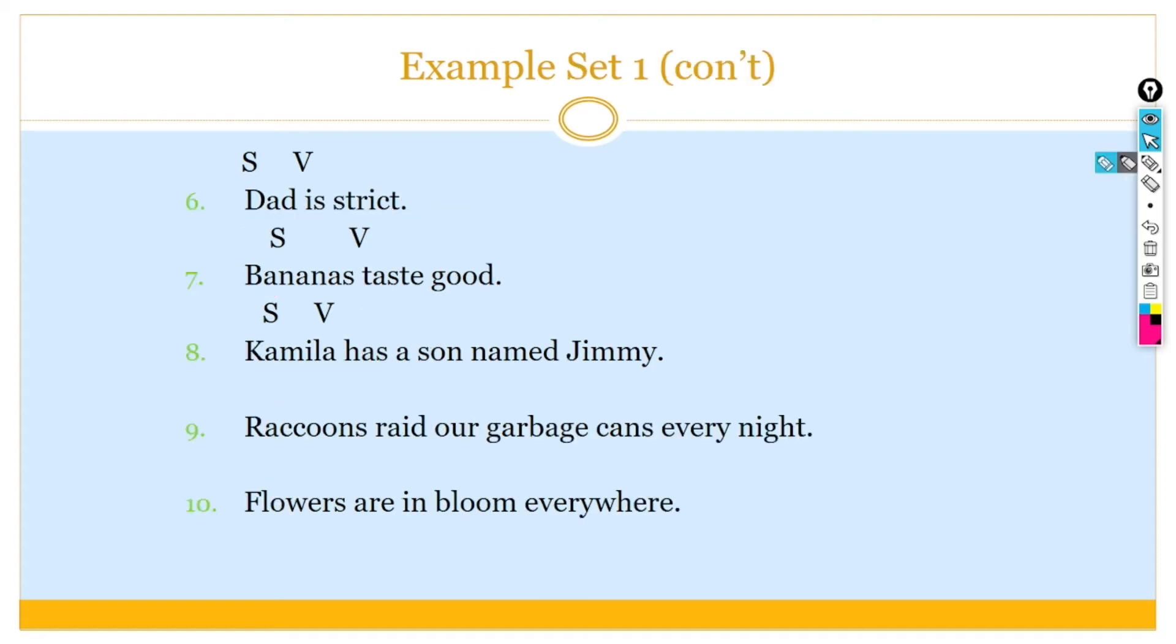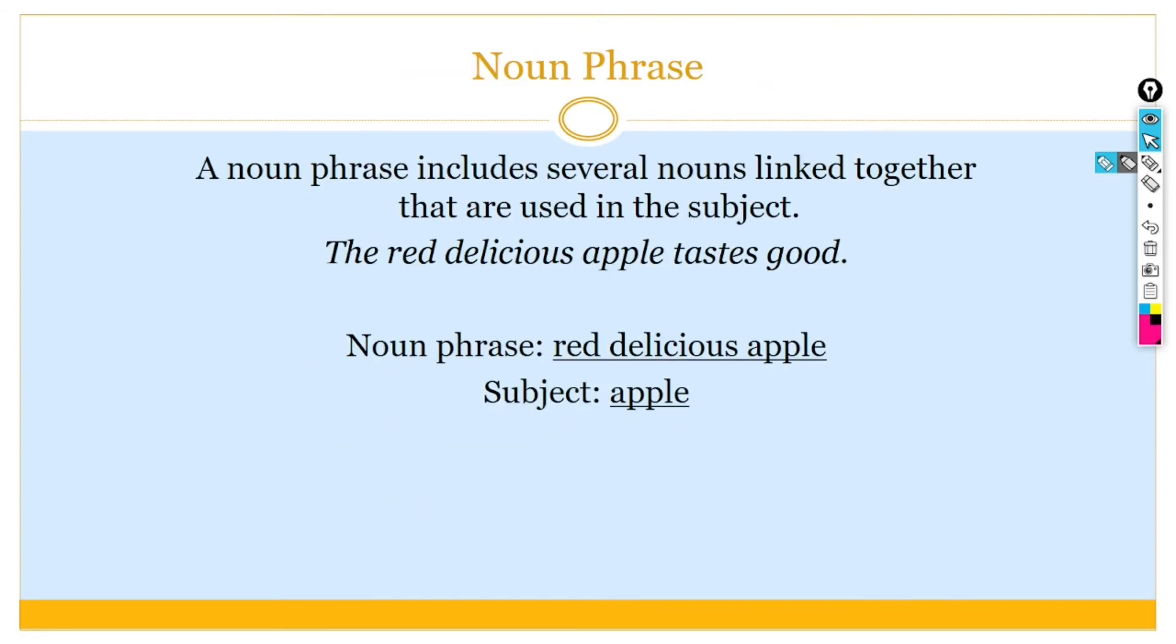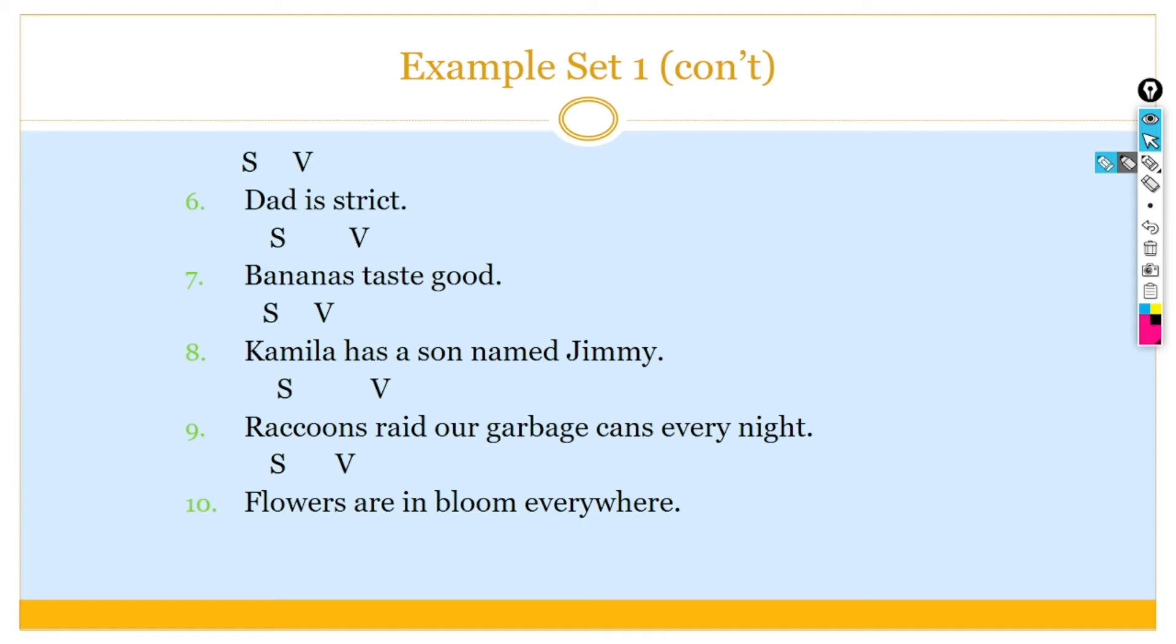Similarly, you can see in other sentences, bananas taste good, bananas is the subject and taste is a verb. Kamila has a son named Jimmy. So, here, you can see the subject and verb. I hope you now understand the two parts: one is subject and other is predicate in this example.